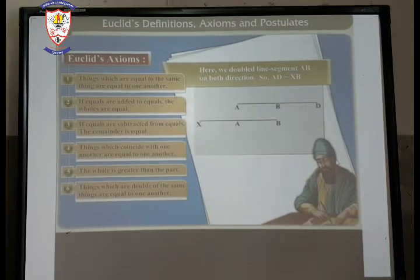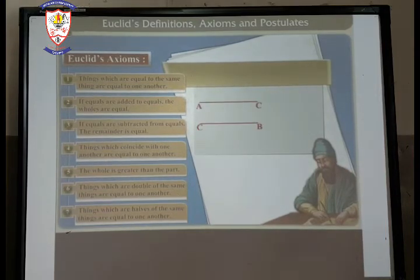Now the sixth: Things which are double of the same things are equal to one another. Here line segment AB. We have doubled the line segment AB on both the direction. So, AD is equal to XB. Things which are half of the same thing are equal to one another.